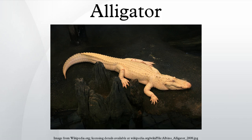Alligators first appeared during the Oligocene Epoch about 37 million years ago. The name alligator is probably an anglicized form of el lagarto, the Spanish term for the lizard, which early Spanish explorers and settlers in Florida called the alligator. Later English spellings of the name included alligator and alligator species.